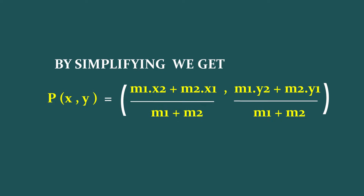The coordinates of the point P which divides the line segment formed by end points A(x1, y1) and B(x2, y2), where P divides AB in the ratio M1 is to M2 internally, are: P = ((M1·x2 + M2·x1)/(M1 + M2), (M1·y2 + M2·y1)/(M1 + M2)).